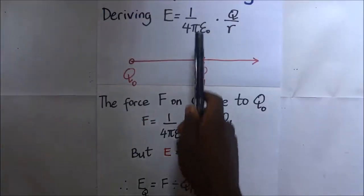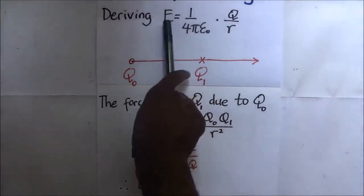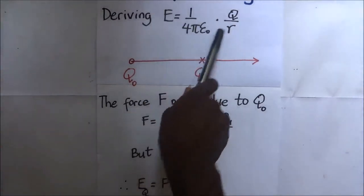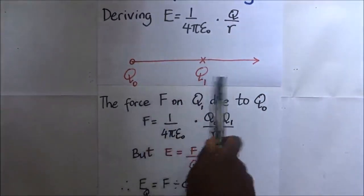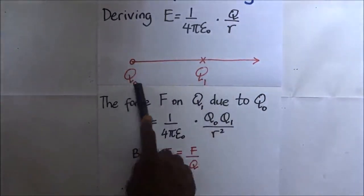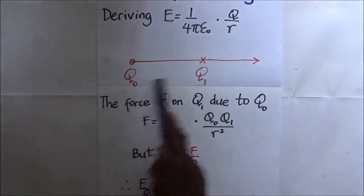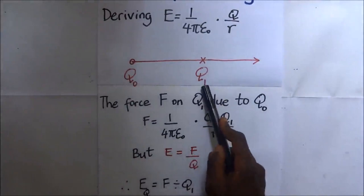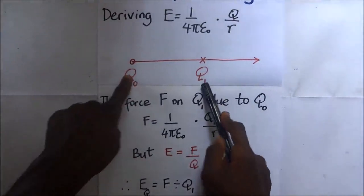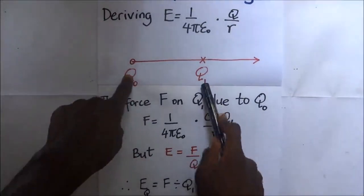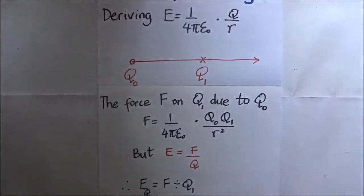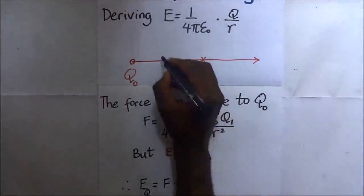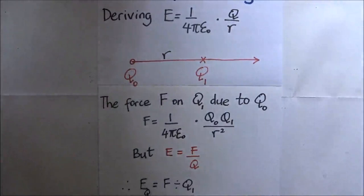We are deriving E, which is equal to 1 over 4πε₀ times that. We have two point charges: charge q₀ and charge q₁. They are separated by a certain distance — let's call that distance r — the distance of separation between q₀ and q₁.